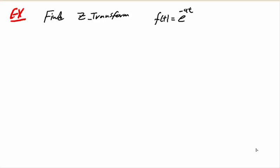Hello and welcome to another video. We continue our video lectures in digital control systems and we need to solve some examples in Z-transform. Here we have an exponential function: f(t) = e to the power of minus at, where a is a real number. We need to find the Z-transform of this exponential function.